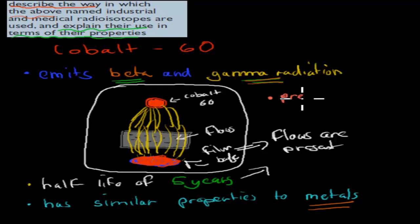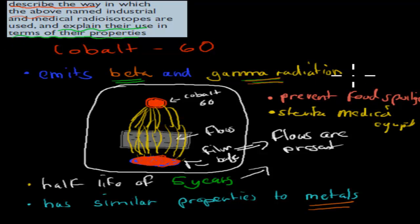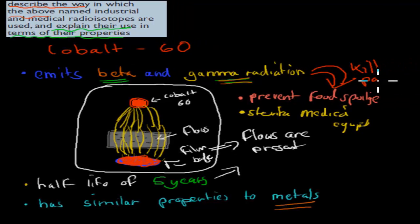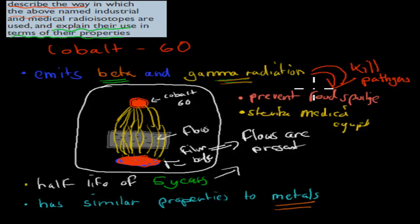Other uses include preventing food spoilage and sterilizing medical equipment. These uses exist because this gamma radiation is so strong it can kill all pathogens and bacteria. Food spoilage happens because of bacteria, so gamma radiation can prevent it. It can also sterilize medical equipment by killing bacteria. These properties of gamma radiation in Cobalt-60 allow it to be used for detecting flaws, preventing food spoilage, and sterilizing medical equipment.